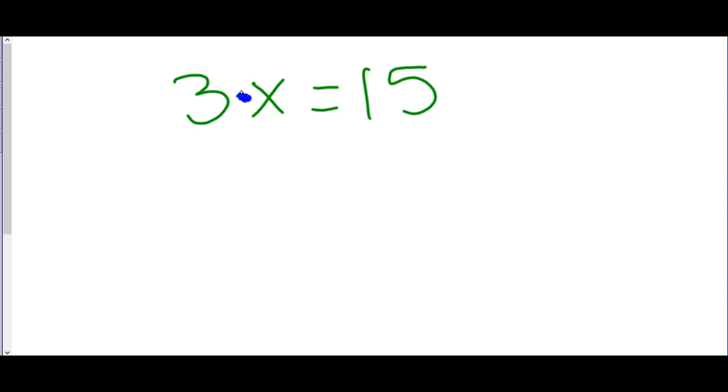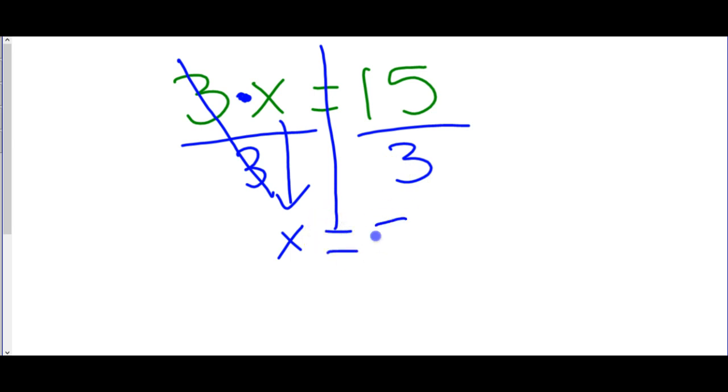Once you know that it's multiplication, then we can do division. So just like with addition and subtraction, we were trying to get rid of stuff, division is going to get rid of the threes, and leave you with just the x. Because division is the opposite of multiplication. But still, what we do to one side, we have to do to the other. So now we do 15 divided by 3, which is 5. So there's our final answer for that problem.